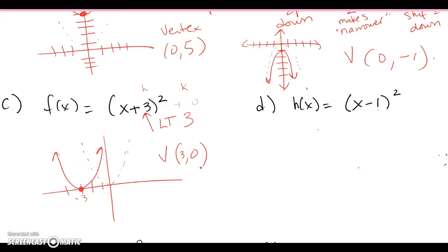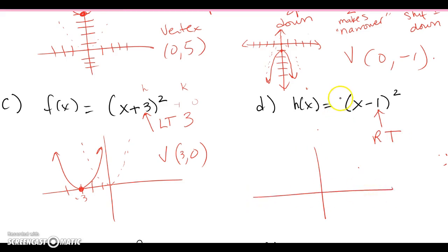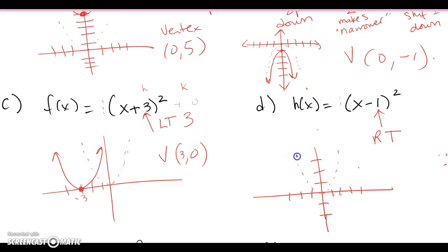This one is very similar to the previous, except it's a minus 1 inside, so the parabola has shifted 1 to the right. The leading coefficient is a positive 1 in both cases, so it opens up — not wider or narrower. For a quick sketch, the vertex has moved to (1, 0).